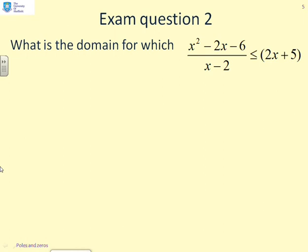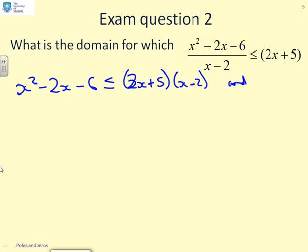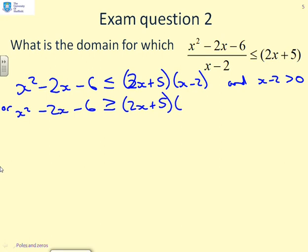Exam question 2. This is a similar sort of question but slightly more straightforward. What is the domain for which x squared minus 2x minus 6 over x minus 2 is less than or equal to 2x plus 5? First, I rewrite that by getting rid of the denominator. x squared minus 2x minus 6 is less than or equal to 2x plus 5 times x minus 2, and x minus 2 greater than or equal to 0; or x squared minus 2x minus 6 is greater than or equal to 2x plus 5 times x minus 2, and x minus 2 is less than 0, because multiplying by x minus 2 might be positive or negative.